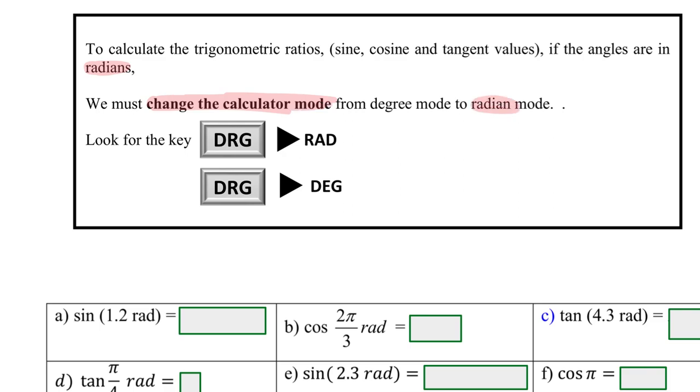Look out for these two keys—either the DRG key or button—because that is the button for us to change from degree to radian or radian to degree.